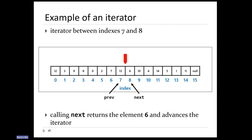This iterator has a value of previous equal to 7 and a value of next equal to 8. Previous and next are not always going to differ by one. Calling next means I want to return the element to the right of the iterator, then move the iterator one position to the right. So if I call next with this iterator, we return the element at index 8 and the iterator moves to between indexes 8 and 9. When the iterator is at the front of the list, it starts with previous equal to minus one and next equal to zero.